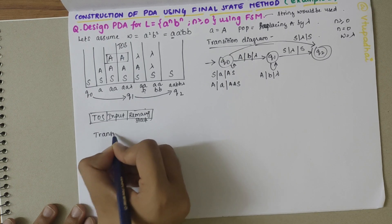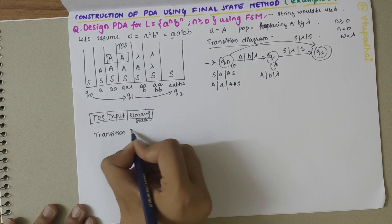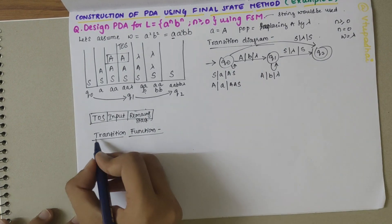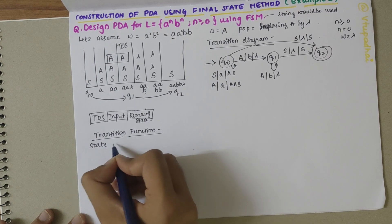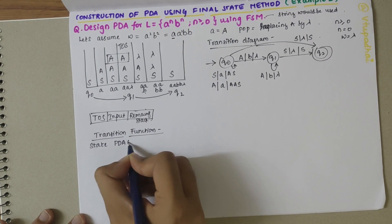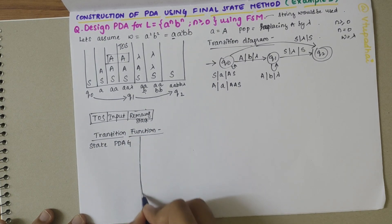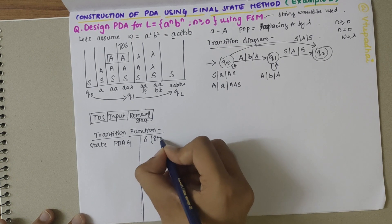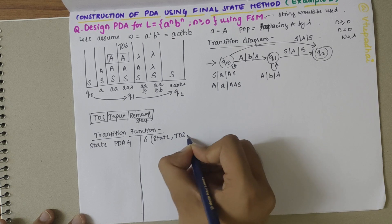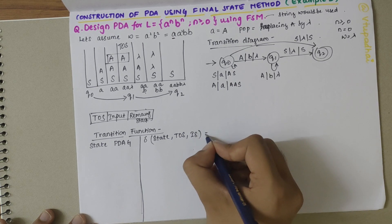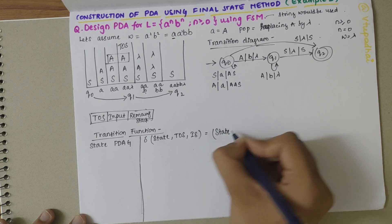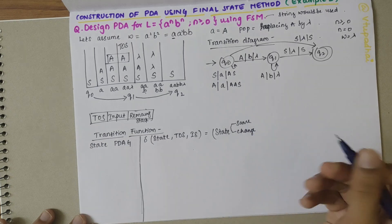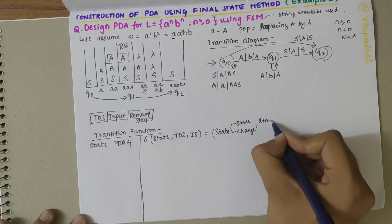The next step is to write the transition function. To write the transition function I refer to the transition diagram. It comprises the state, the top of stack, and the input string, which equals either the same state or a changed state, followed by whatever is remaining on the stack.